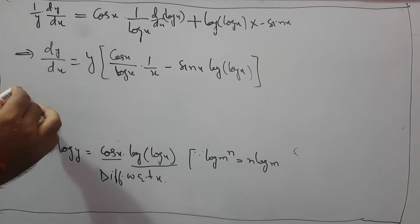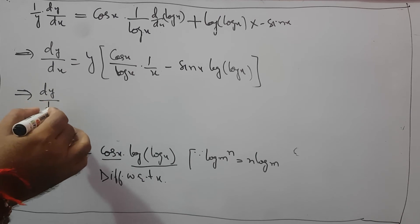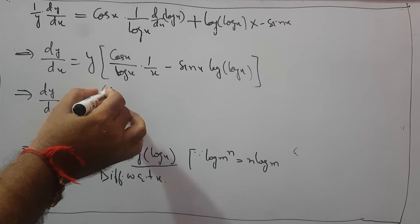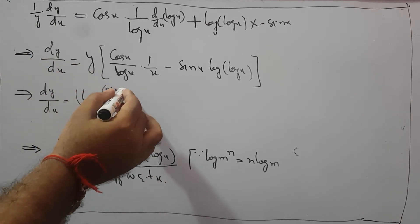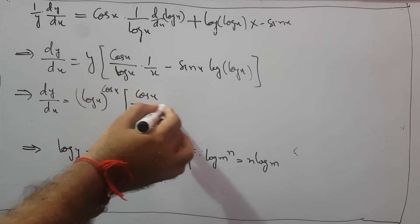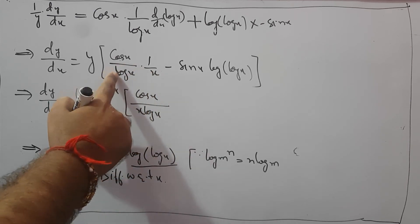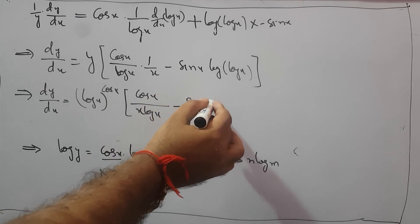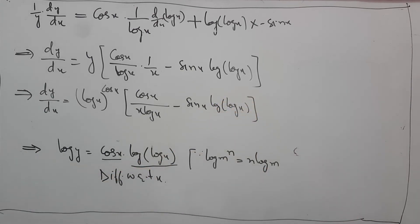Now we will put the value of y. You would remember what we supposed y to be: y equals log x raised to power cos x. That is the value of y we supposed at the start. So dy upon dx equals log x raised to power cos x, times the quantity cos x upon x log x minus sin x into log of log x. This is the answer to this question.